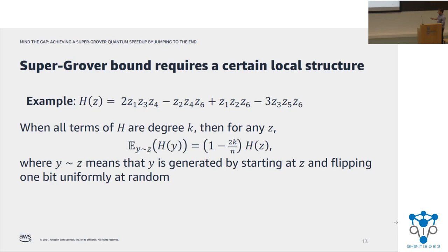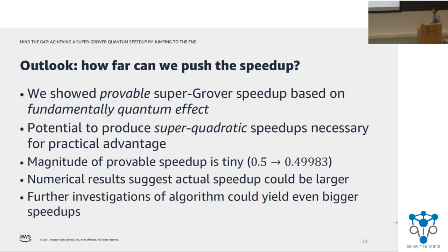However, to lower bound each term, we do have to invoke some structure in the cost function. So what structure do we exploit? It comes from the locality of the cost function. So here's an example of a cost function, which is a sum of local terms. In fact, every term has the same locality. It has degree 3. When this is the case, you can make a statement about what happens to the energy on average when you flip a bit at random, because each bit participates in only a small number of the clauses. This is the structure that we end up exploiting to prove our claims.